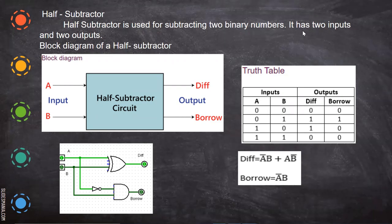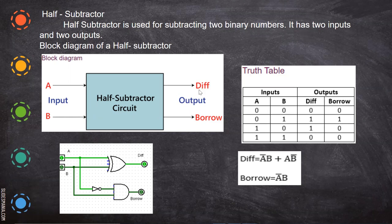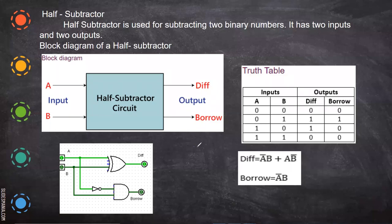Now we are going to see subtraction — how you can subtract two bits. For two-bit subtraction we use a half subtractor. In the block diagram, A and B are inputs and there are two outputs: one is the difference and the other is the borrow.